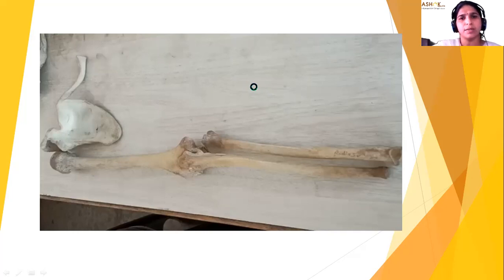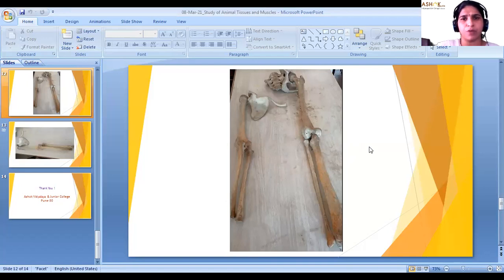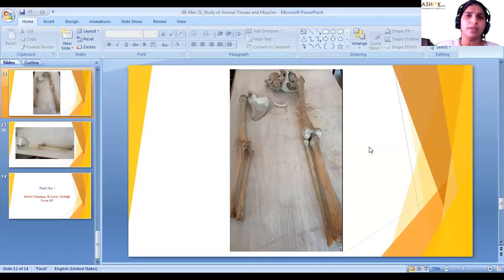In the exam, any bone specimen may be presented and you have to write the name of that bone and give a comment — half mark for correct bone identification and half mark for explanation. I hope all of you understood these bone specimens as well as the study of animal tissues and muscles. Read it one or two times and you will understand very well. Thank you very much.